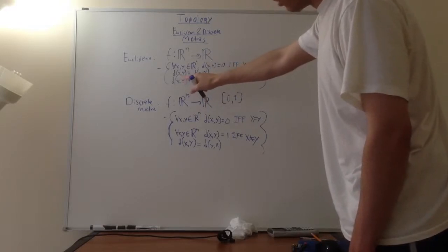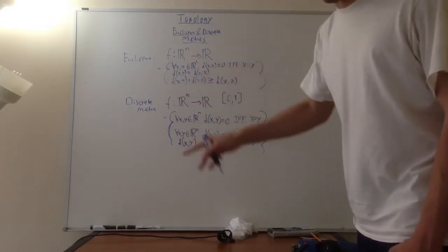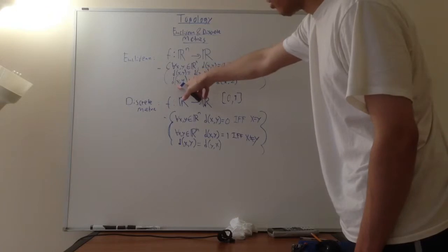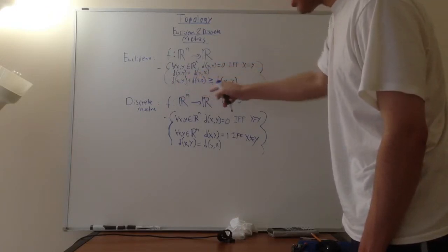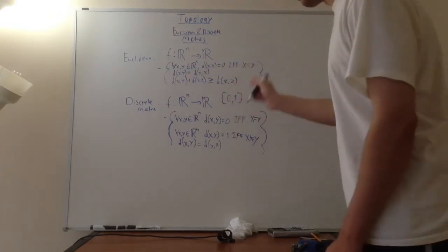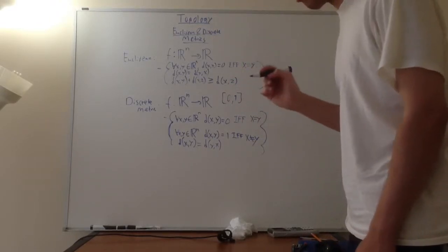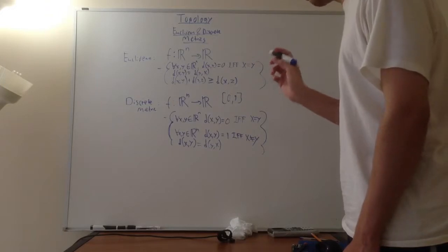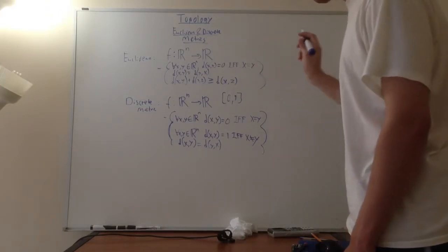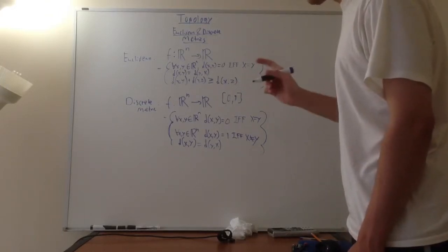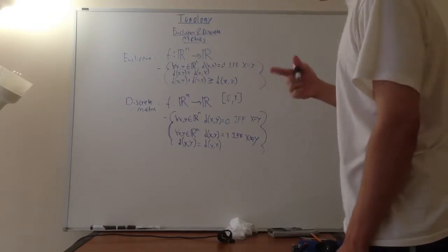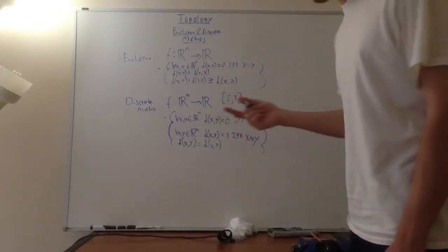And also, another property of Euclidean metric is something called the triangle inequality, where you have the distance between x and y plus the distance between y and z is greater than or equal to the distance between x and z. And that is an important property, and I will be proving this and talking a little bit more about it in a different video. But it's an interesting proof and concept that I'll touch on later.